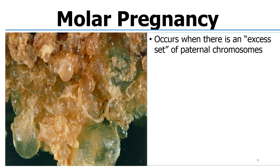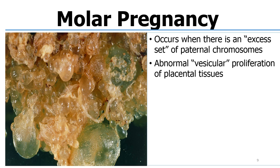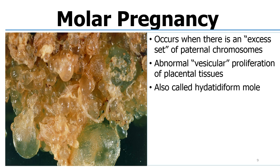Basically, it's a condition that occurs when there is an excess set of paternal chromosomes, either due to duplication of the spermatozoon or due to entry of more than one spermatozoon within the ovum. There is abnormal vesicular proliferation of the placental tissue — these vesicles — so it's also called a vesicular mole pregnancy, or sometimes a hydatidiform mole.